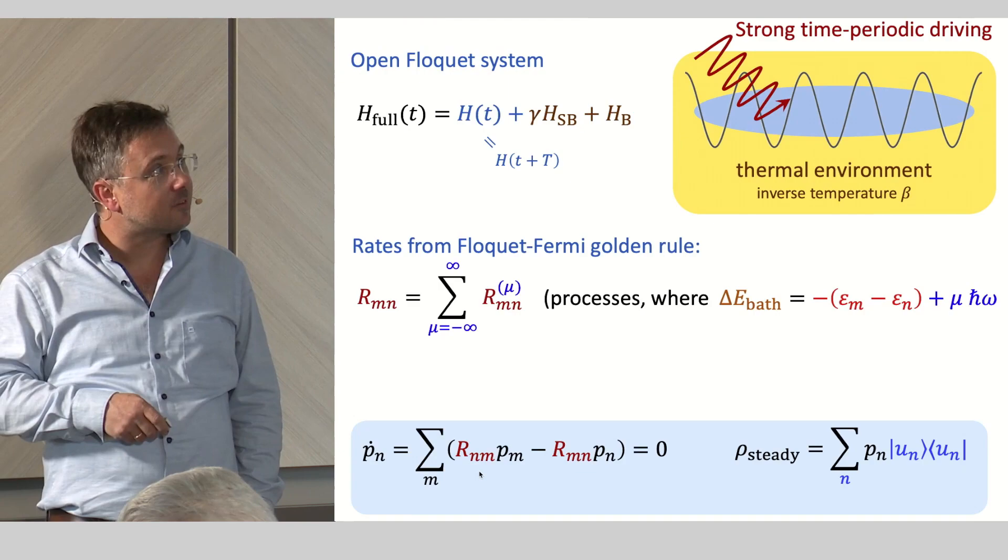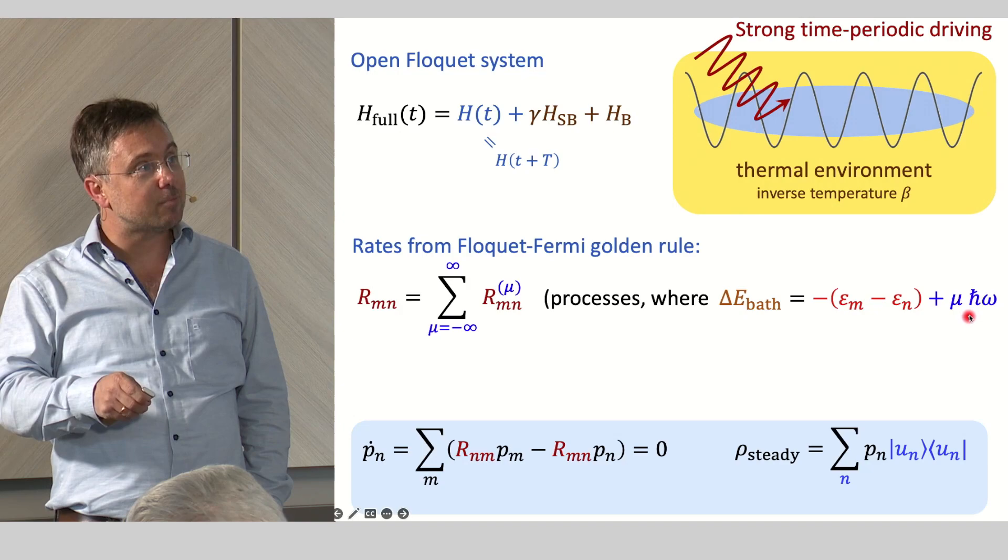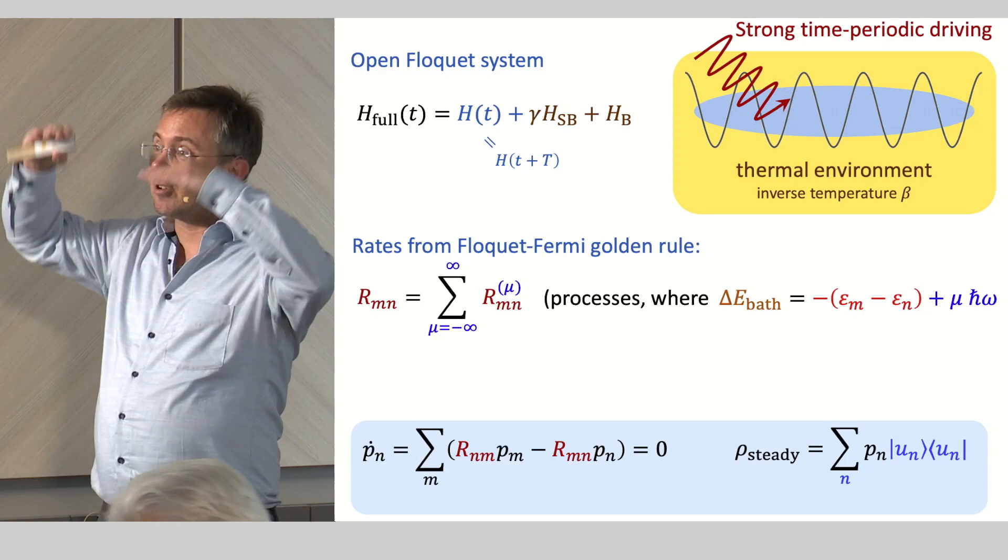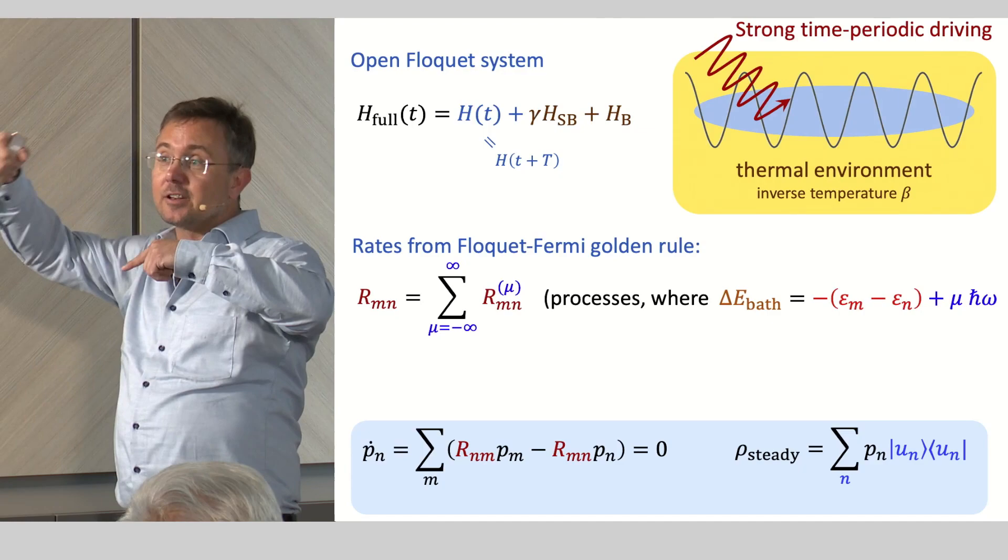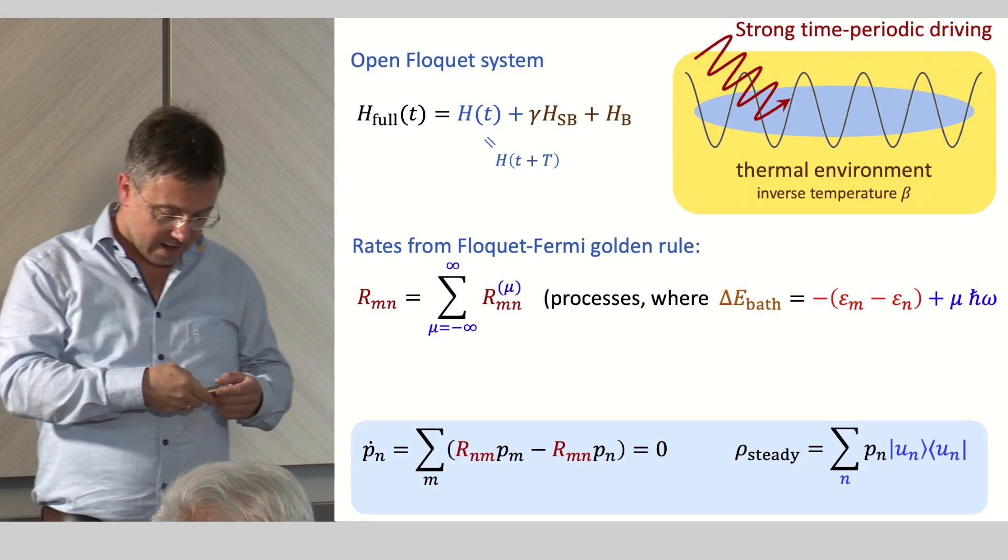Now, how do these steady states look like? We have to look at the rates and the rates have a specific structure. They are a sum over processes where the bath energy change is inverse to the quasi-energy change plus integer multiples of h-bar omega. This means that you can have the same transition between two Floquet states while going up in energy in the bath or going down in energy in the bath. So the notion of high energy or low energy is really lost in these Floquet systems. This tells you that this is a non-equilibrium process.